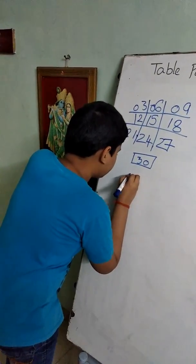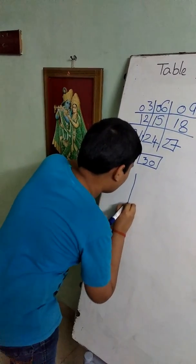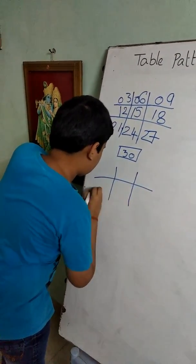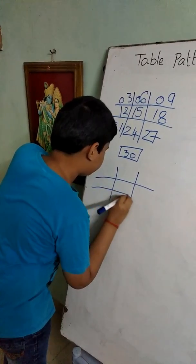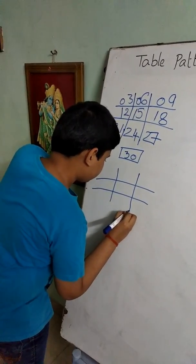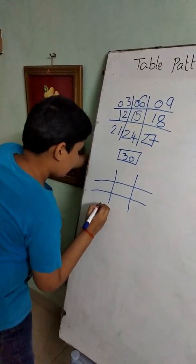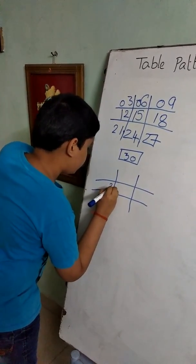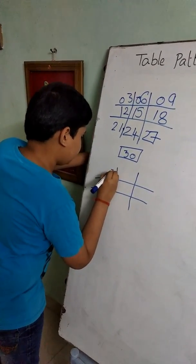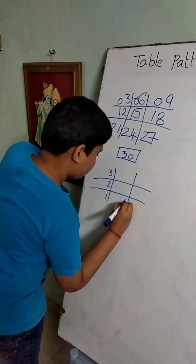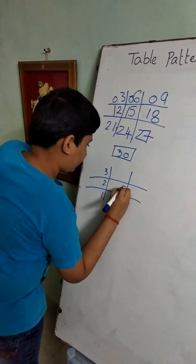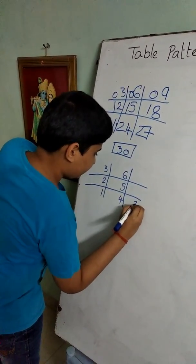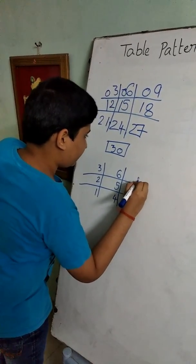Again we should take 2 vertical lines and 2 horizontal lines. Now we should write 1, 2, 3, 4, 5, 6, 7, 8, 9.